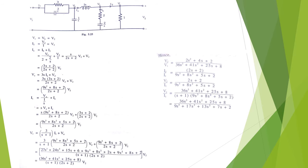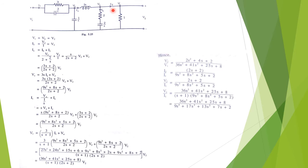This is a ladder-type network where we must find the transfer functions V2/V1, I2/I1, V2/I1, and V1/I1. V2 is the output port voltage. Node voltages Vb and Vc equal V2 from the diagram. Branch current I2 is the current through the 1-ohm resistance: Vc/1 = V2. Current Ia is the sum of Ib and I2. Ib is the current through the branch with impedance (2 + 2/s): Vb/(2 + 2/s) = V2/(2 + 2/s).